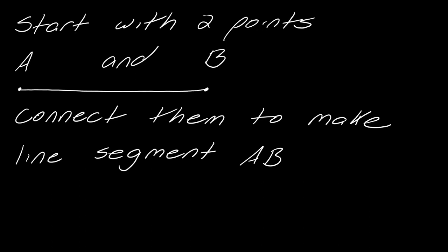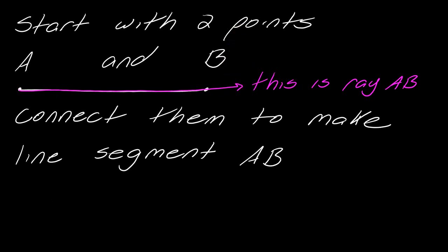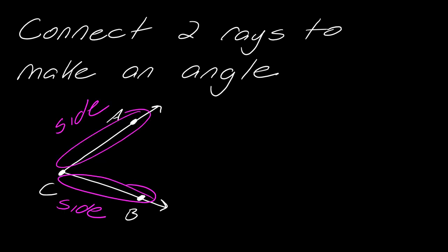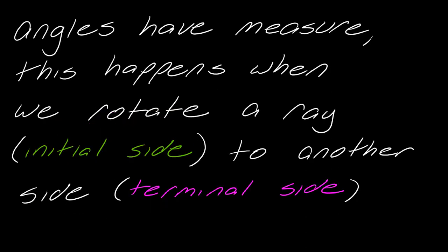And if you were to take that line segment and just extend it like you see here, so now this becomes a ray — you see how I've just extended it for forever. This is a ray. This is actually the first part of an angle, and if you connect two rays, that's what technically from a mathematical standpoint makes an angle. Some terminology: this is the vertex, this point here where the two rays are connected. These are considered to be the sides of an angle. And angles have measure, and this happens when we rotate a ray, which is what we call the initial side, to another side, which is called the terminal side.